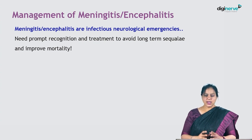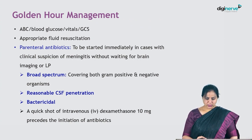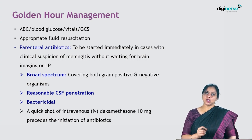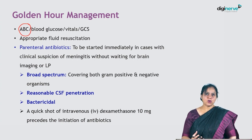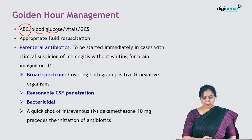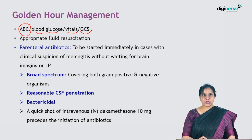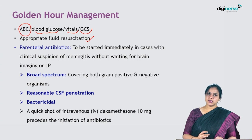Meningitis and encephalitis are infectious neurological emergencies requiring prompt management. In the golden hour, when a patient arrives at triage, immediately perform ABCs: assess the airway, give supplemental oxygen if saturations are low, and intubate with rapid sequence induction if the patient cannot protect the airway or has low GCS. Also check blood glucose, vitals, and GCS, and carry out appropriate fluid resuscitation.